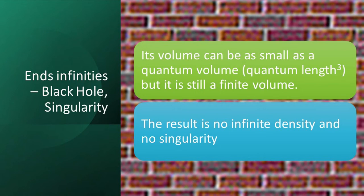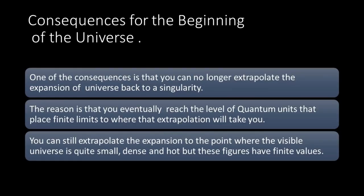The result is no infinite density and no singularity. One of the consequences is that you can no longer extrapolate the expansion of the universe back to a singularity. The reason is that you eventually reach the level of quantum units that places finite limits on where the extrapolation will take you. You can still extrapolate the expansion to the point where the visible universe is quite small, dense, and hot, but these figures have finite values.